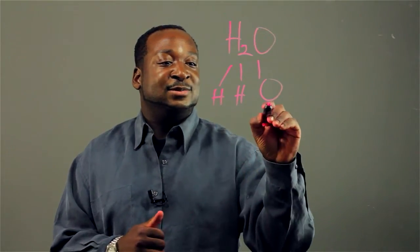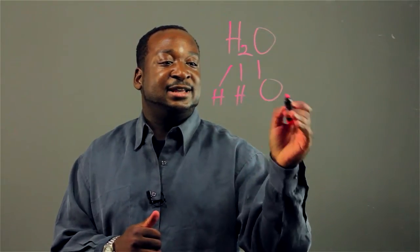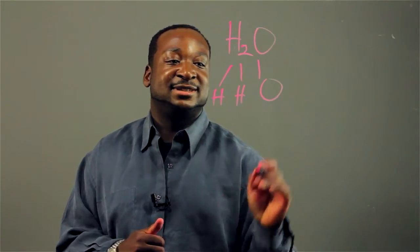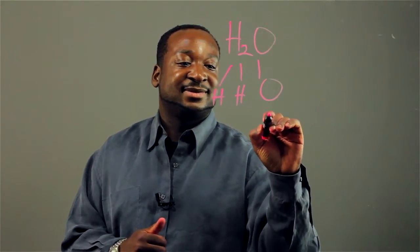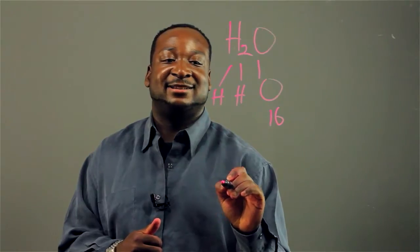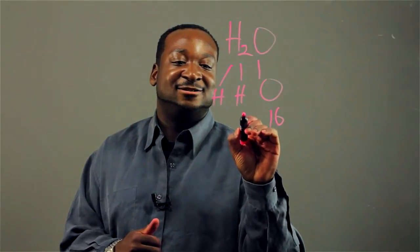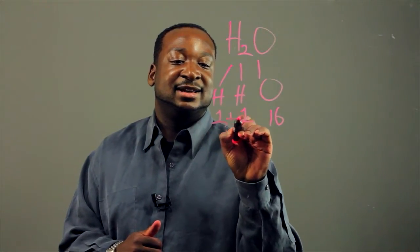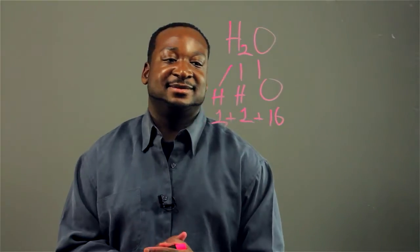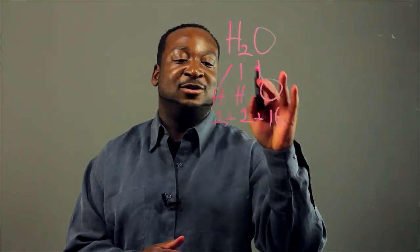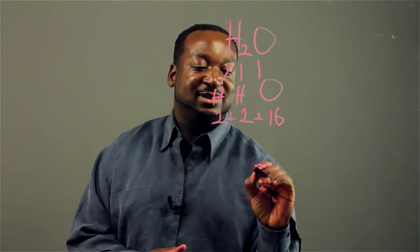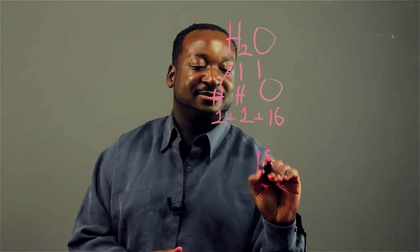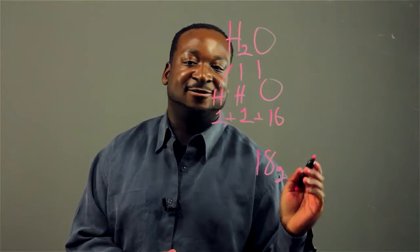Now I'm going to convert this into grams. Oxygen — that's 16, we know from the periodic table. Hydrogen — it's one. And then I'm going to add them. So one mole of water, that's equivalent to 18 grams.